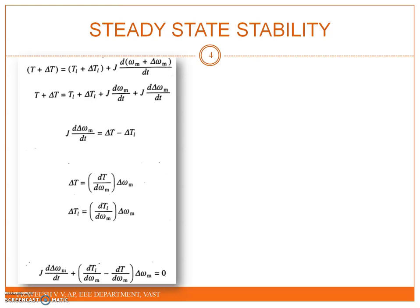Now we will substitute the equations. Substituting gives: J times d(delta omega_M) by dt plus (dT_L by d-omega_M minus dT by d-omega_M) times delta omega_M equal to 0. This is a first-order linear differential equation.